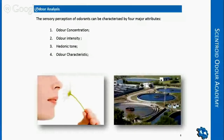Odor can be characterized by four different parameters. The first one is odor concentration — this is the most important one, and we'll go over it in detail in a minute. The second one is odor intensity. Then we have hedonic tone and odor characteristic.